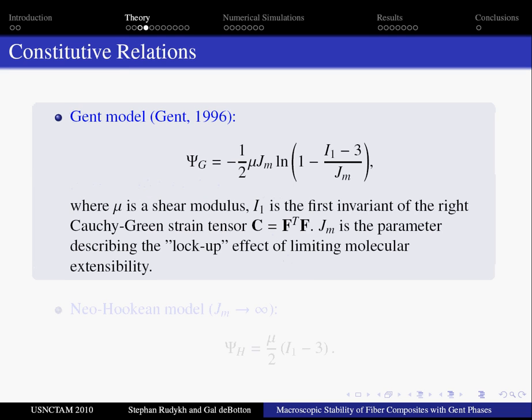We consider the behavior of rubber-like materials. To this end, we use the so-called Gent model, that captures the lock-up effect of the molecular chain extensibility limit. When the stretch reaches a level of i1-3 approaching jm, the stress dramatic rise occurs and the material locks up. One should know that in the limit when jm goes to infinity, this model is reduced to neo-Hookean.